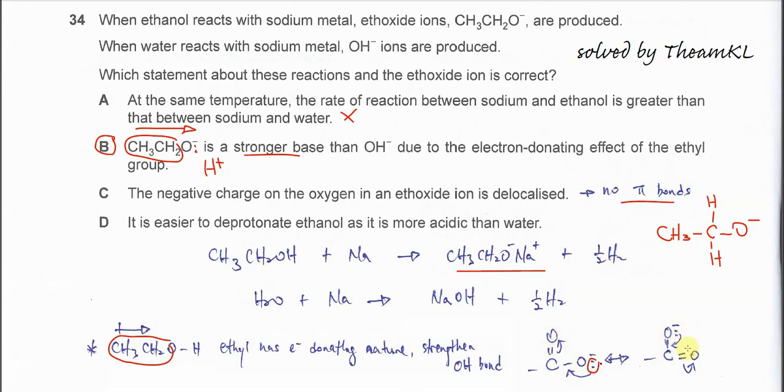It will form this resonant structure. We say that this can be delocalized. This negative charge on oxygen can delocalize in this part. Therefore, option C is wrong because there are no pi bonds.